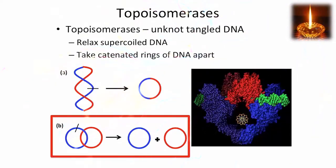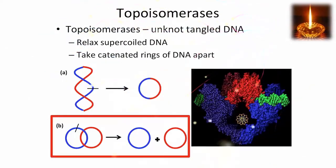Sometimes DNA is formed where two circular pieces of DNA pass through each other. These are called catenated rings. Treating these with topoisomerases can allow the rings to become separated from each other.